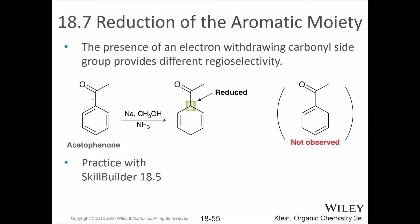Here's an electron-withdrawing group. How is it electron-withdrawing? Via resonance. We looked at these as electron-withdrawing in the Diels-Alder, and we'll see it again in the next chapter. So if we have an acetyl group — a carbonyl carbon — on the ring, that's electron-withdrawing, and this one IS going to be reduced when we subject it to the Birch reduction.